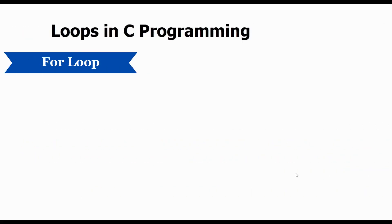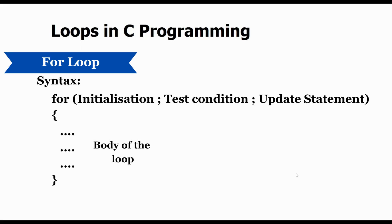Let's start with the for loop. Before using any loop we must understand the syntax. The syntax for the for loop uses a for keyword. In the bracket we initialize the variable first, then by using a semicolon as a terminator we mention the test condition, again a terminator, and then we mention the update statement. Then in the curly braces we write our block of statements, which is the body of the for loop.